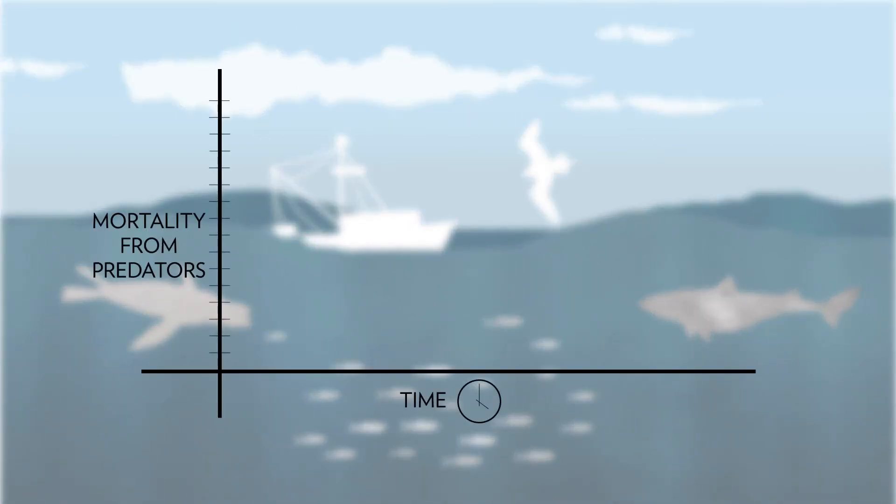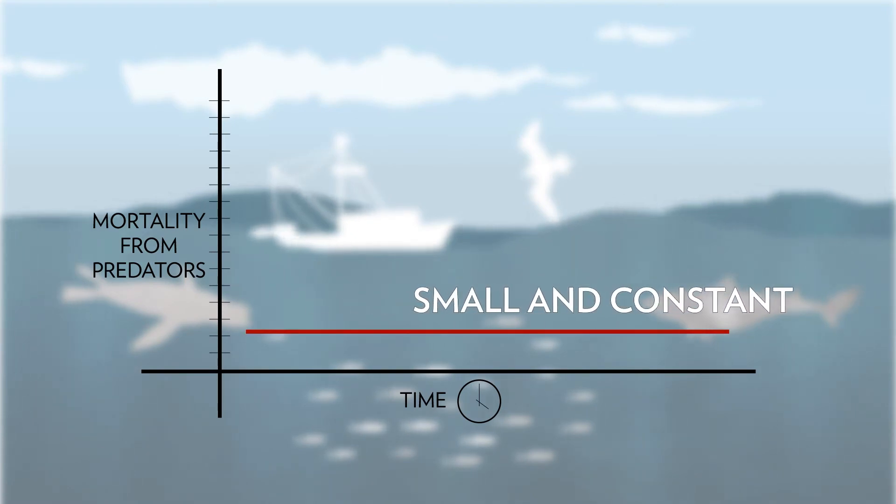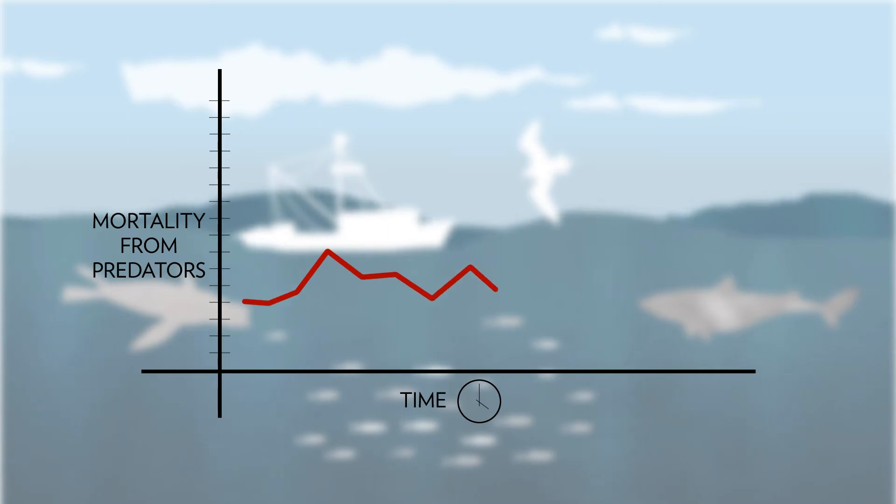In general, these models assume that predators eat a small and constant share of fish. In reality, the amount of fish predators consume fluctuates widely and can be a large share of the prey.